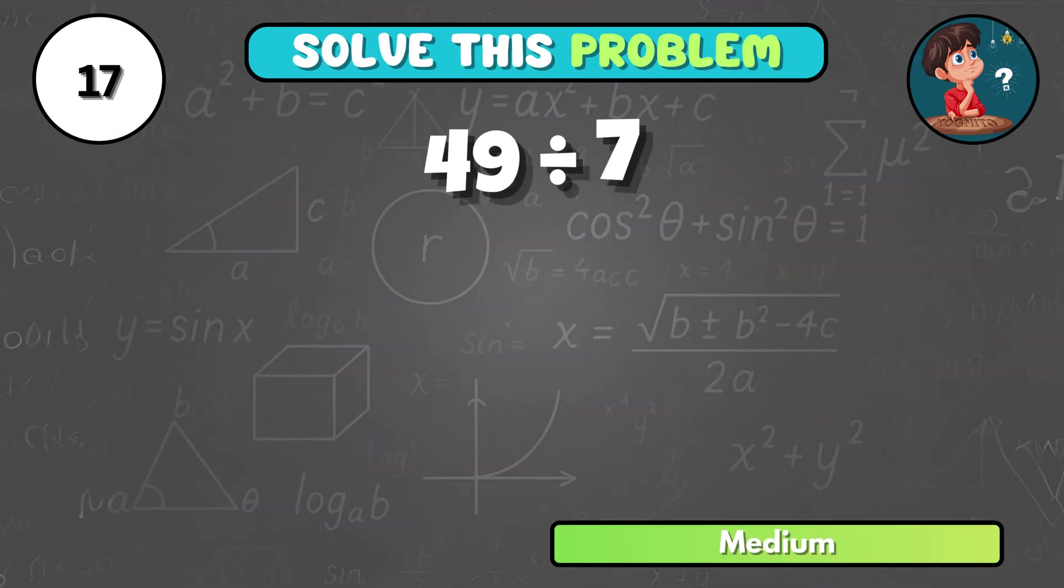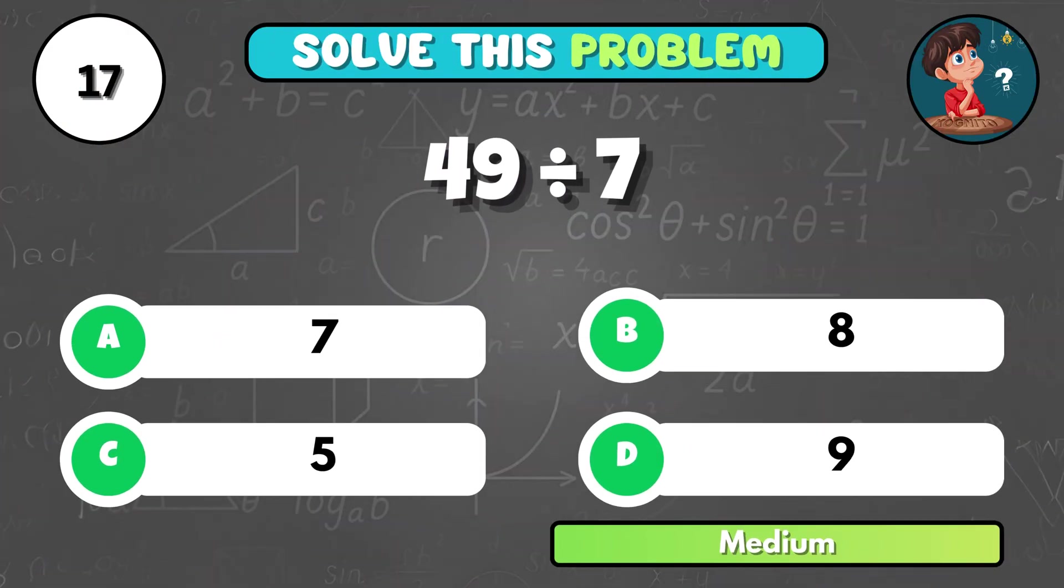Can you calculate 49 divided by 7? That's A, 7.